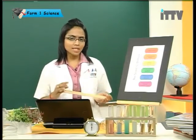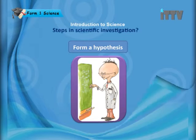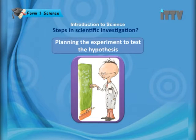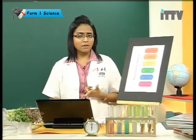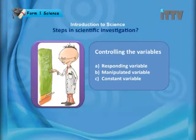Now let's see how you actually carry out an experiment and look at the scientific method in more detail. Firstly, you identify the problem. Next, you form a hypothesis. Then you plan the experiment to test the hypothesis. While planning the experiment, you have to make sure you use the correct material, the correct apparatus, and the right procedures. You also have to decide how you're going to collect the data. Next, you have to have control of the variables. Firstly, you have responding variable. Next, you have manipulated variable. And lastly, you have constant variable.